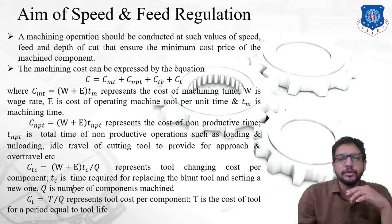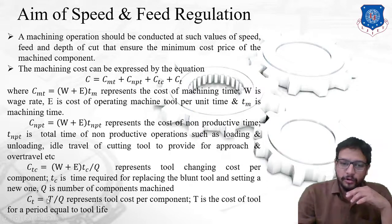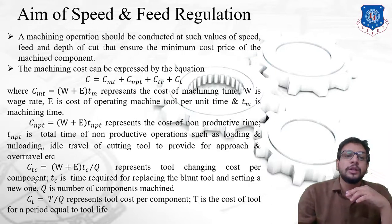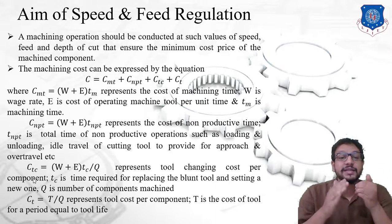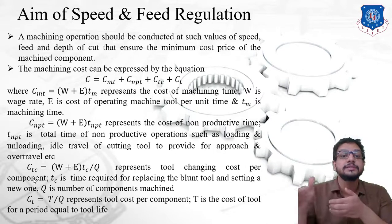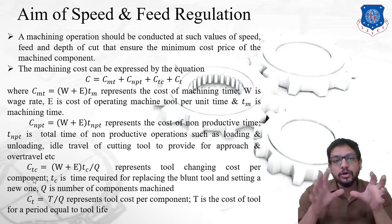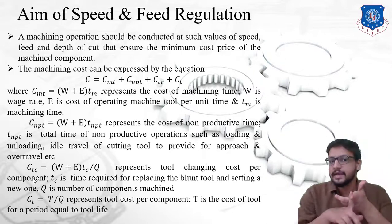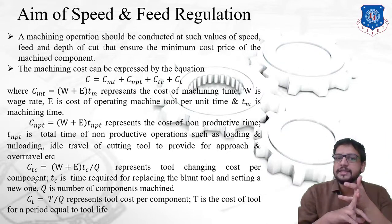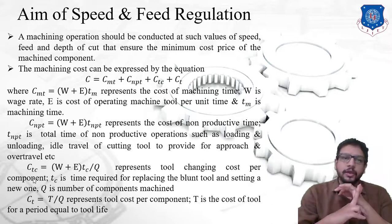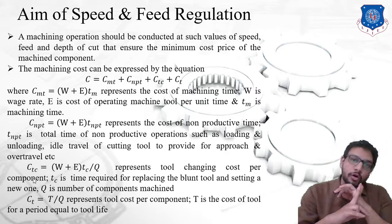The last term, Ct, is the tool cost per component, equal to T / Q, where T represents the tool cost for a period equal to the tool life, and Q is the number of components machined. Tool life is defined as the time between two successive grindings or re-grindings. The total machining cost includes Cmt, Cnpt, Ctc, and Ct, and our aim is to minimize this total cost by controlling cutting speed, feed, and depth of cut.